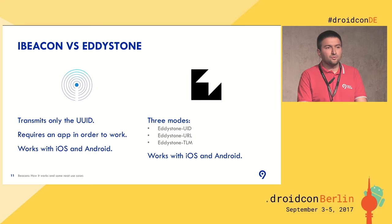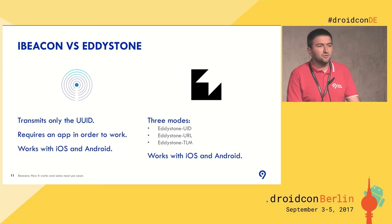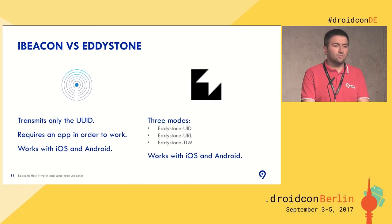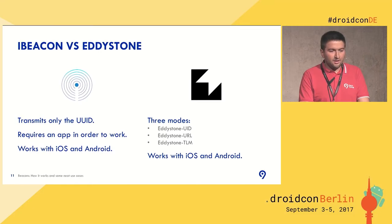The second mode is Eddystone URL. This one is interesting because you can broadcast a URL, and you don't really need to have an app for this. You don't need users to install your app in order to detect your beacon. You will get a notification of nearby Eddystone URL beacons if you have a Chrome browser installed on your phone. It works on both iOS and Android — all you need is to enable Physical Web in the options.